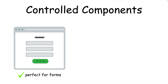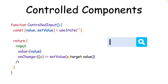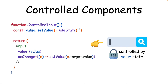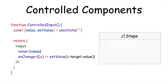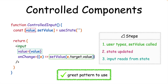Controlled components use state values to have more predictable behavior. Here's an example of a controlled component where the value typed into the input is being put into state and controlled by the state variable value. The user types, and setValue puts what the user typed into state. The state value is then updated, and the input uses that updated state as its value. Controlled components are a great pattern because if we want to change the component's behavior, we just need to change the state that controls it.